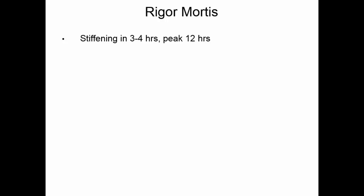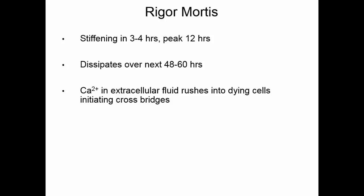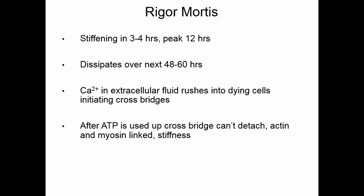Rigor mortis is a stiffening of the muscles that starts about three to four hours after death and peaks at about 12 hours, then dissipates over the next 48 to 60 hours. This occurs because calcium in the extracellular fluid can't be kept out of the cells — once you die, there are no more pumps to maintain membrane function, so ions including calcium enter the cell, initiating cross-bridge formation. After ATP is all used up, cross-bridges can't detach, so actin and myosin stay linked, causing that permanent contraction. Eventually the proteins degrade and rigor mortis dissipates.